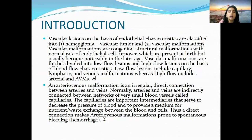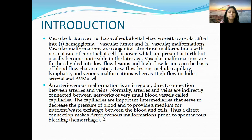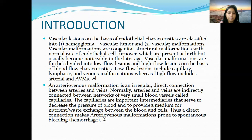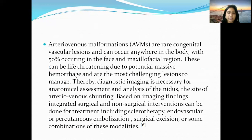AVMs represent an irregular direct connection between arteries and veins. Normally, arteries and veins are indirectly connected through networks of very small blood vessels called capillaries. These capillaries serve to decrease blood pressure and provide a medium for nutrient and waste exchange between the blood and cells. When there is a direct communication, as in AVMs, it makes them more prone to spontaneous bleeding. They are rare congenital vascular lesions that can occur anywhere in the body.